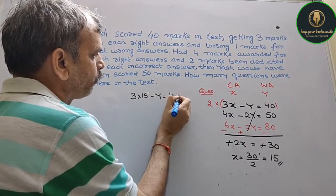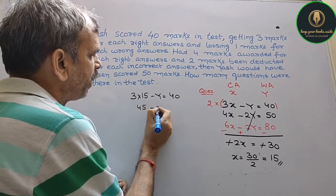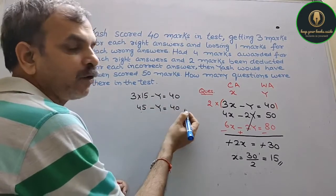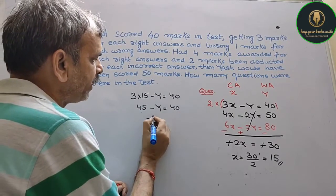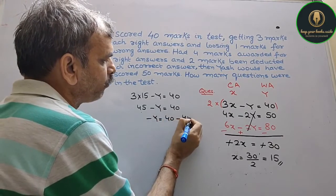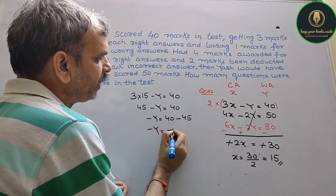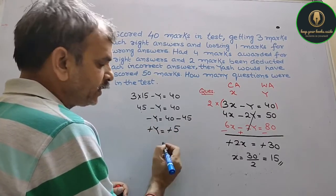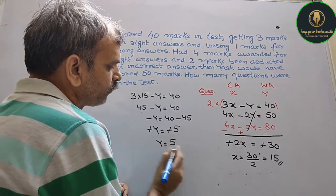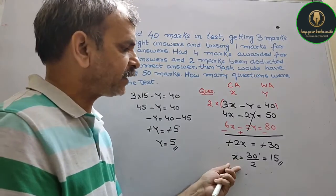So now, 3 into 15 is equal to 40. That becomes 45 minus Y equals 40. Take 45 to right side, so minus Y equals 40 minus 45. So minus Y equals minus 5. Minus and minus get cancelled, so Y equals 5.